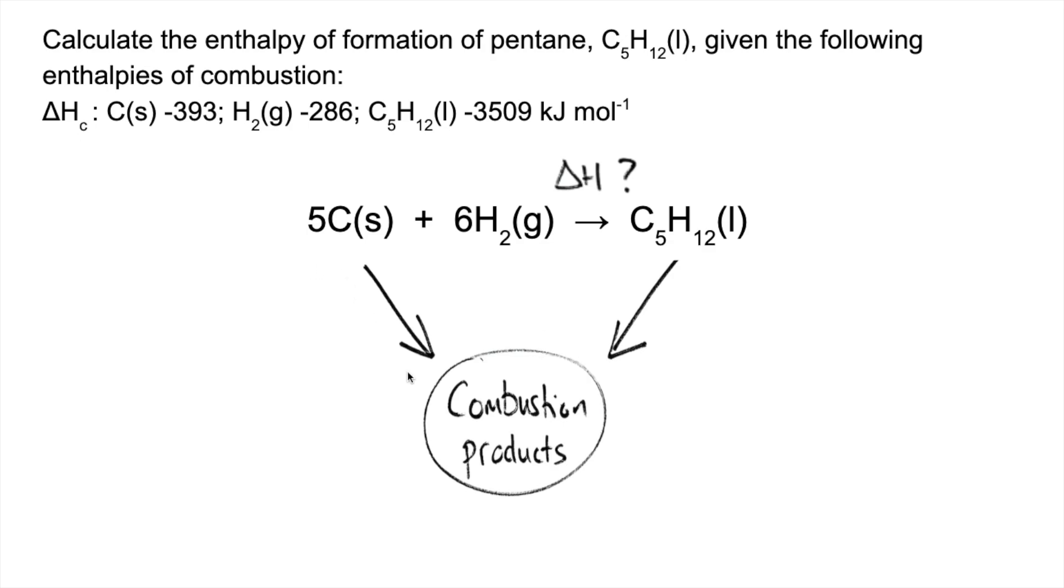This arrow here represents the sum of the enthalpy change of combustion of the reactants. That's 5 times -393 because there's 5 moles of carbon in the equation, these values are just per mole, and 6 times -286. That gives us a total of -3681.